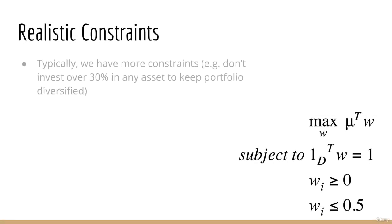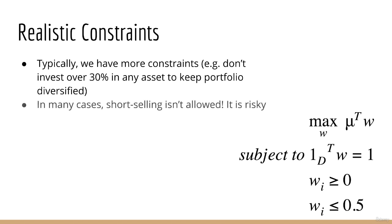In reality, we often have additional constraints on the weights of our portfolio. For example, we might say don't invest more than 30% into any particular asset. This will keep your portfolio diversified. We might also say don't short any more than 10% on any particular asset. In many cases, shorting isn't allowed period. For example, your boss may simply tell you no short selling.